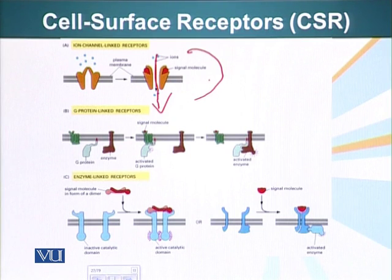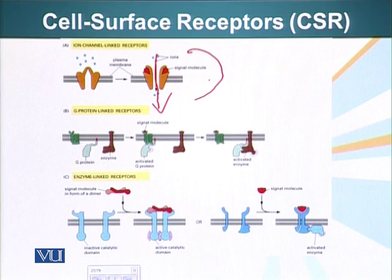For example, if it is a sodium channel receptor, when the ligand binds that ion channel receptor, it will open up and allow only sodium ions to pass through — not potassium, not calcium, nothing else.